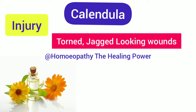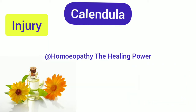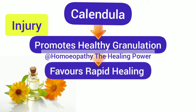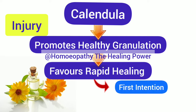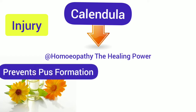Calendula also works on torn and jagged-looking wounds in post-surgical operations. It promotes the healthy granulation of tissues and favors the rapid healing process — specifically rapid healing by first intention, meaning the first phase of healing, which is the stoppage of bleeding.